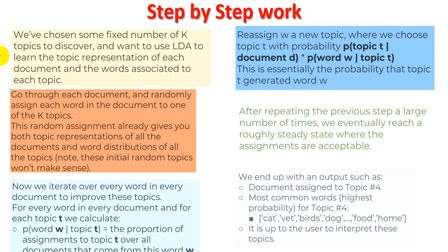Step 1: We choose a fixed number of topics K to discover and use LDA to learn the topic representation of each document — the words associated with each topic will differ with respect to K and the distribution. Step 2: For each document, randomly assign each word to one of the K topics. Note that these initial random topic assignments won't make sense at first.